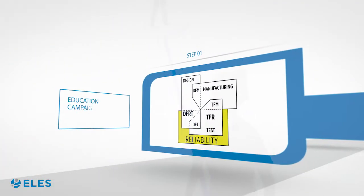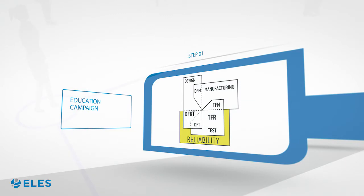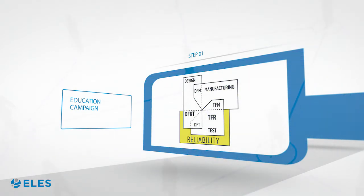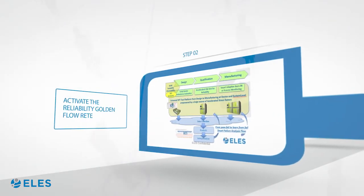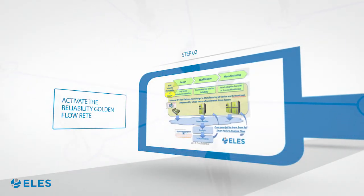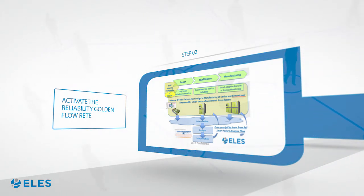Step 1: Initiate a public awareness and education campaign on the need to integrate reliability within the semiconductor manufacturing processes, according to the RETE vision. Step 2: Activate the reliability golden flow RETE for each phase of the semi-production process — design validation, quality and reliability, and manufacturing.